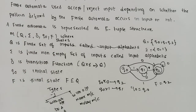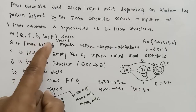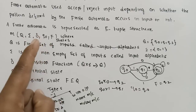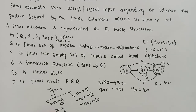To summarize the 5-tuple: Q is the set of states, sigma is the input symbol, delta is the transition function, Q0 is the initial state, and F is the final state. Please subscribe to this channel, watch the video with your friends. Thank you for watching.